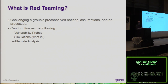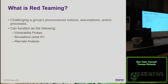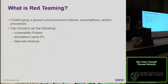So what is red teaming? The classical definition is challenging a group's preconceived notions, assumptions, and/or processes — looking at what some group of folks are doing and asking, are you doing the right thing, and why? These generally function as three things: vulnerability probes, simulation exercises, and alternative analysis. Most of what we do in InfoSec ends up being around vulnerability probes, but there are also simulations like war gaming, and alternative analysis — looking at a body of information to see if the first folks came up with the right conclusions and ensuring there's no bias when reviewing a set of data.